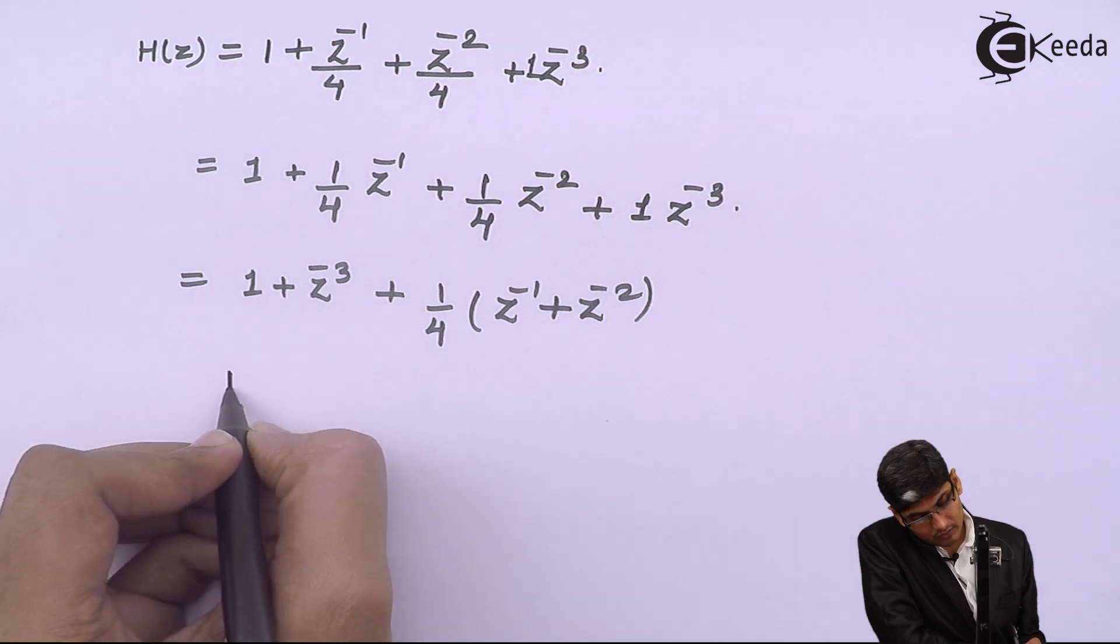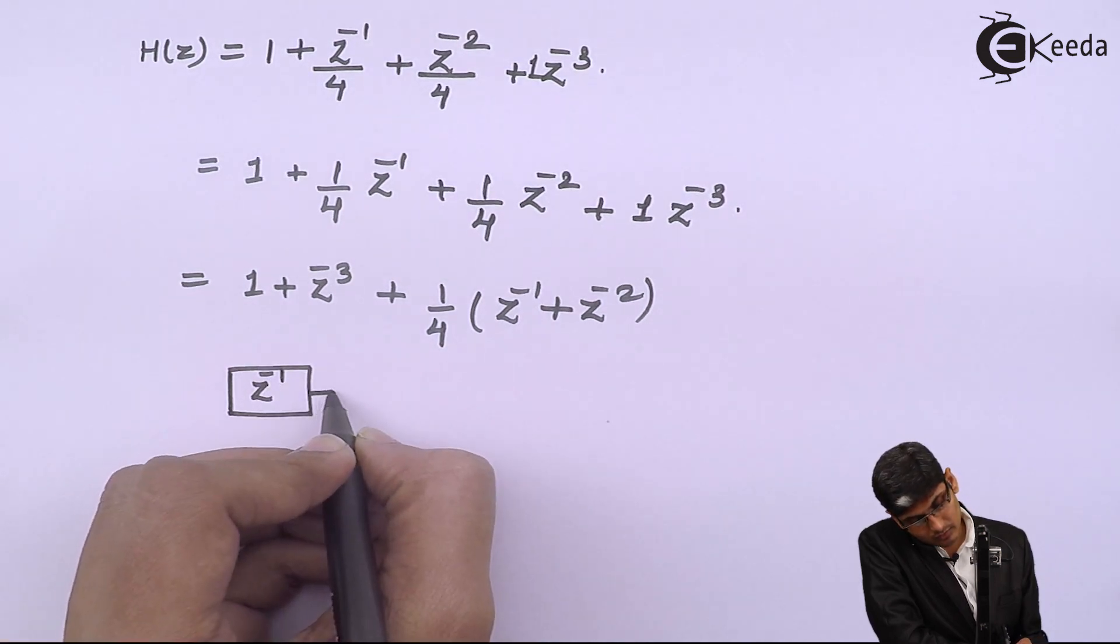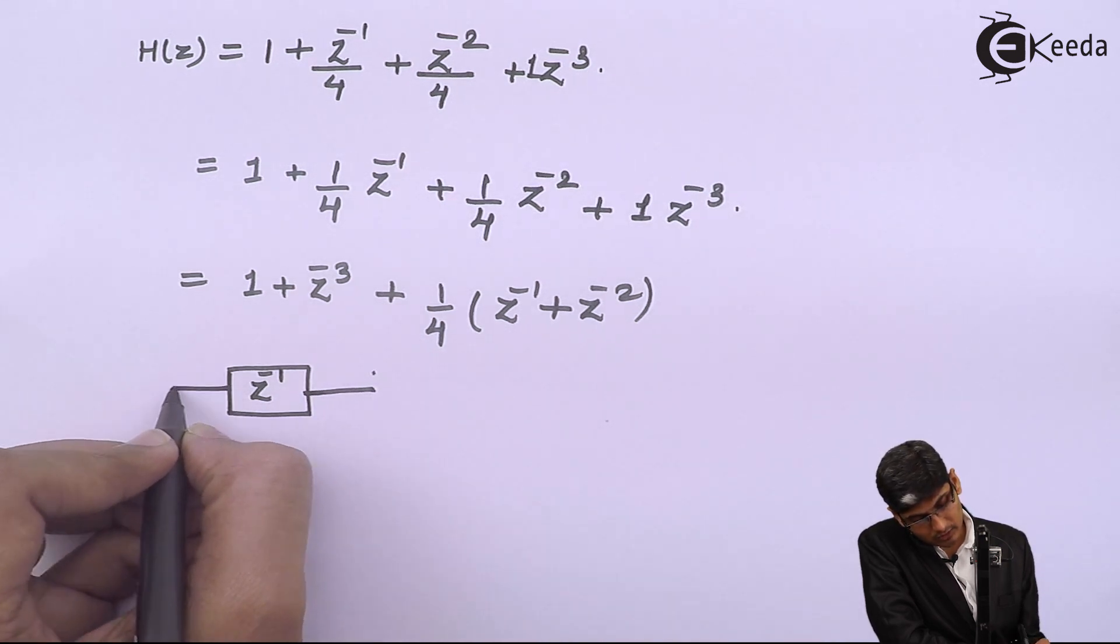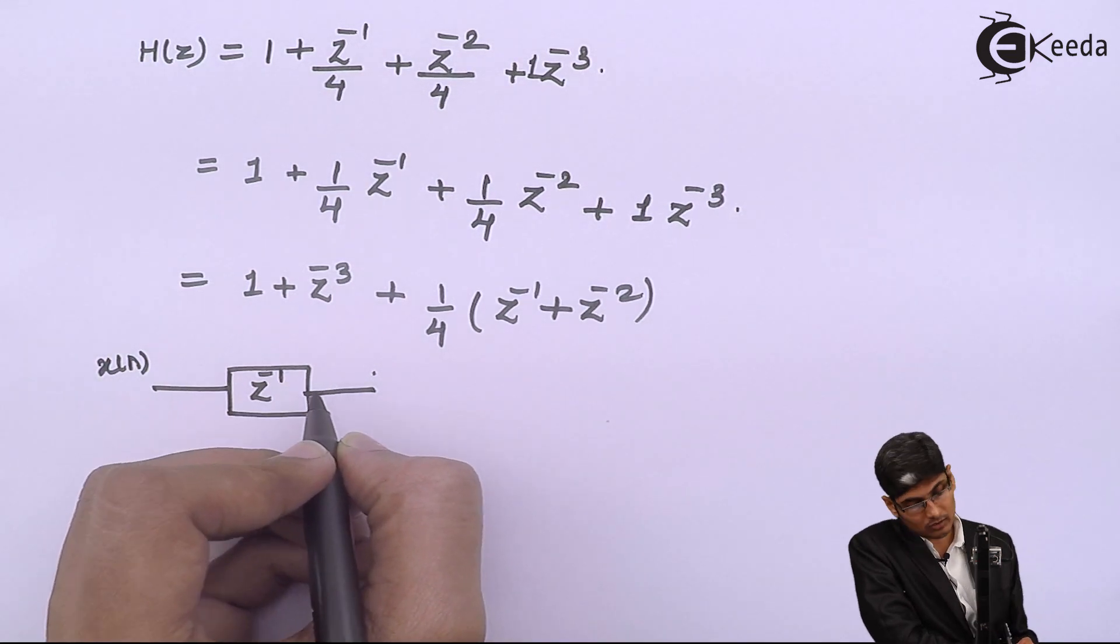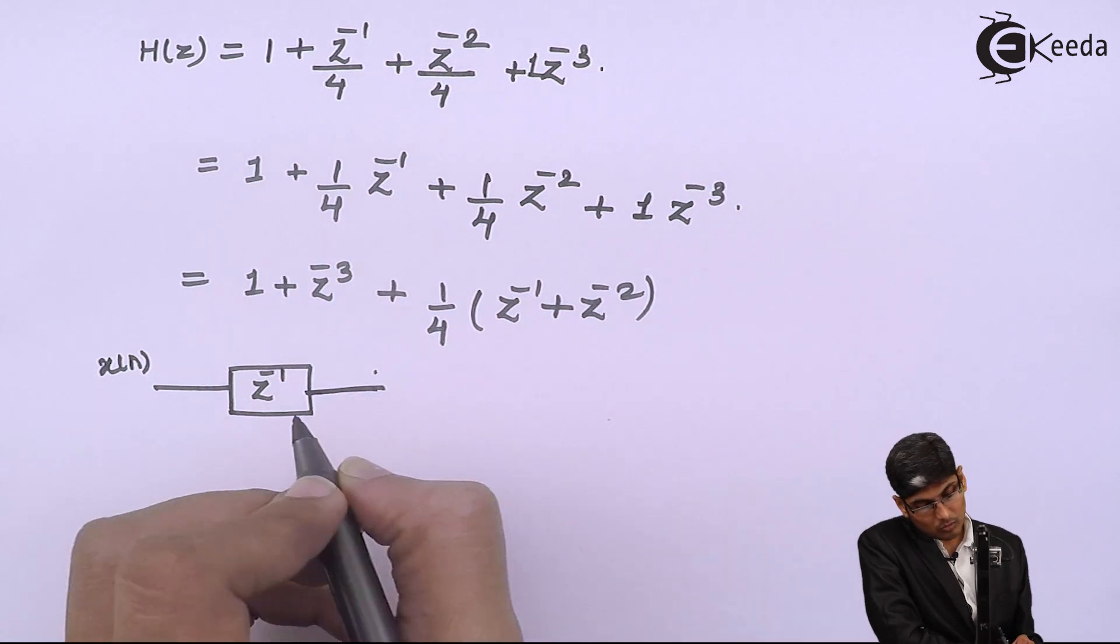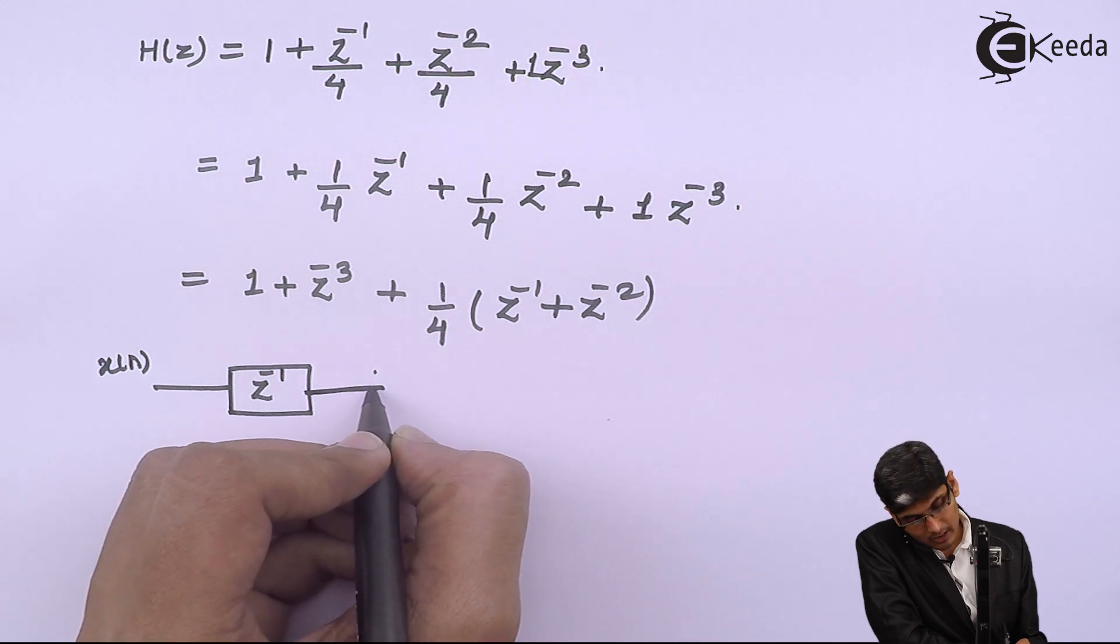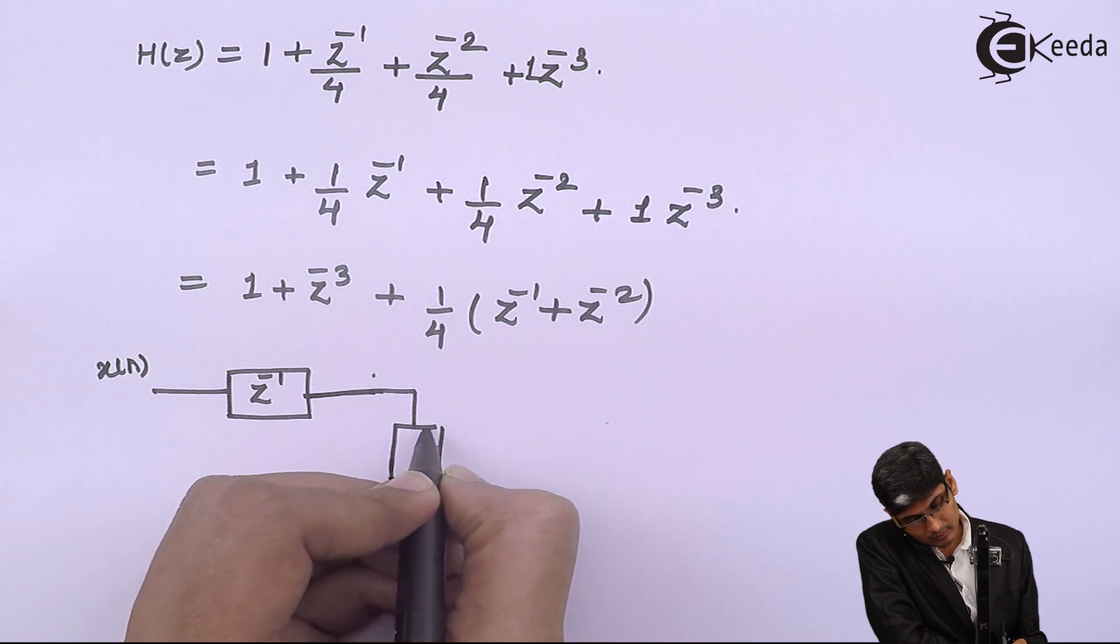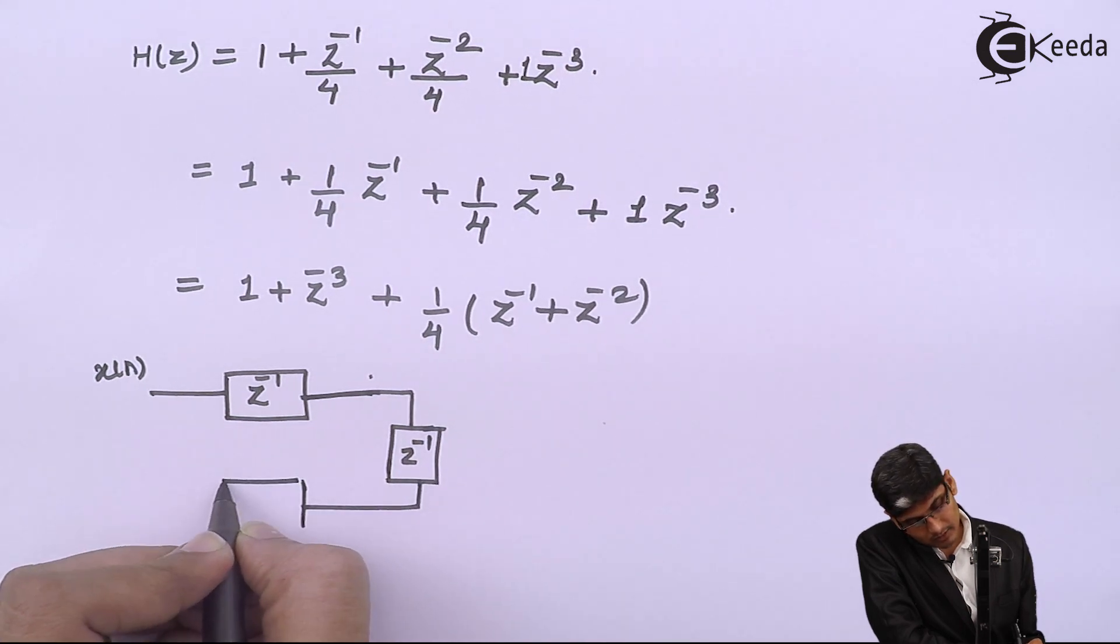So for the structure, we require total of 3 blocks. Z raise to minus 1, this will be X of N. This will be Z raise to minus 1 X of N. Then, because I want 1 and 2 to be similar, on the similar pace, I will delay this structure by using like this. Z inverse and then I will Z inverse this.